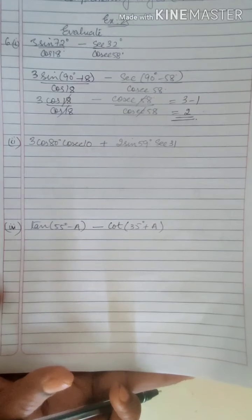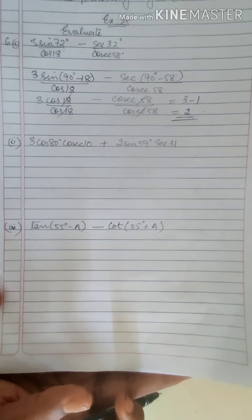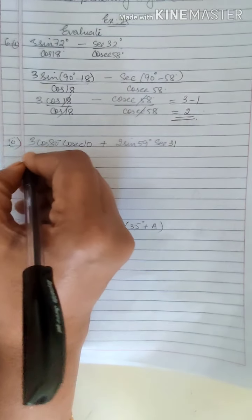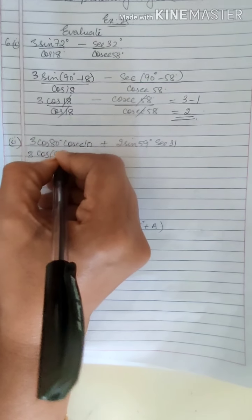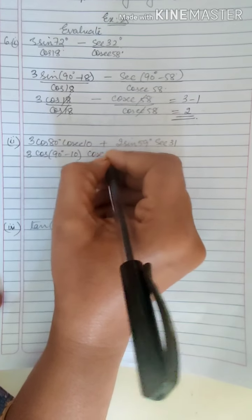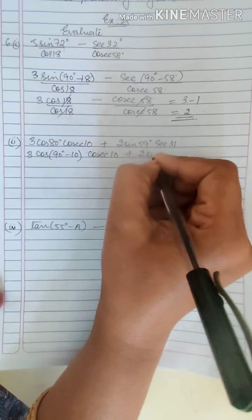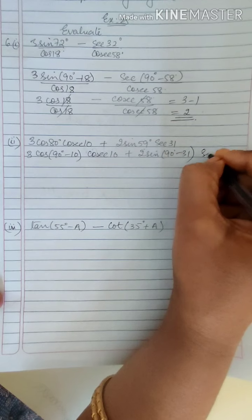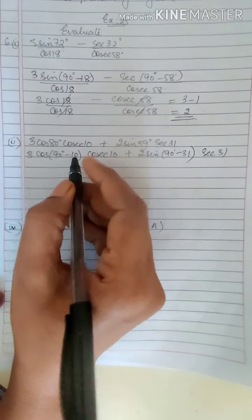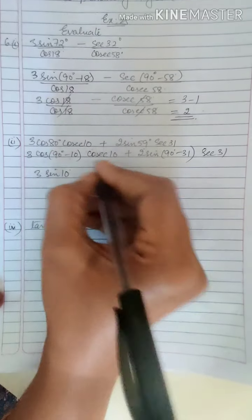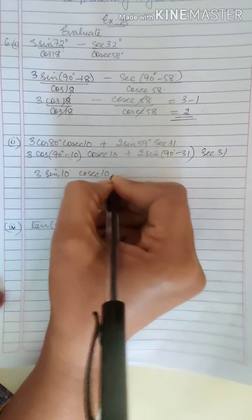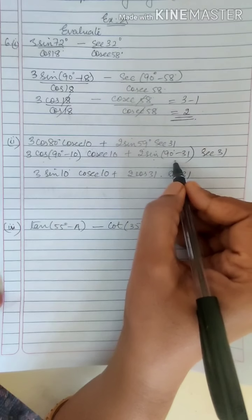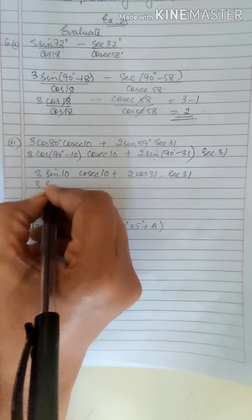The next sum: 3 cos 80 cosecant 10 plus 2 sin 59 secant 31. Now the complementary angle of 80 is 10. So this can be represented as cos(90 minus 10) cosecant 10 plus 2 sin(90 minus 31) secant 31. Now cos(90 minus theta) is sin theta, so you get 3 sin 10 cosecant 10 plus 2 cos 31 secant 31.